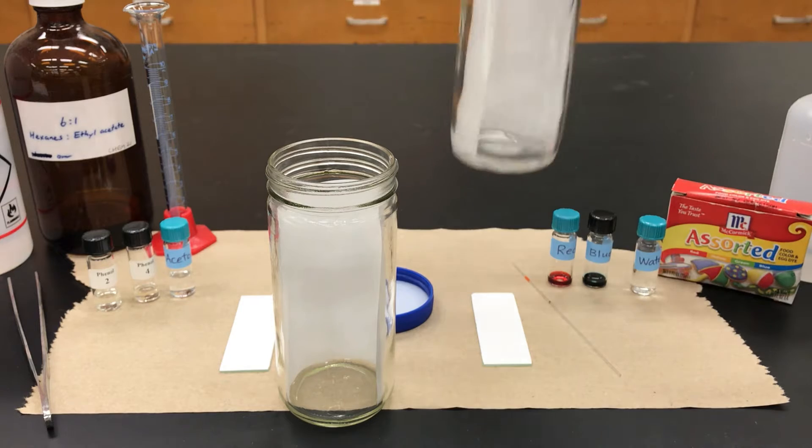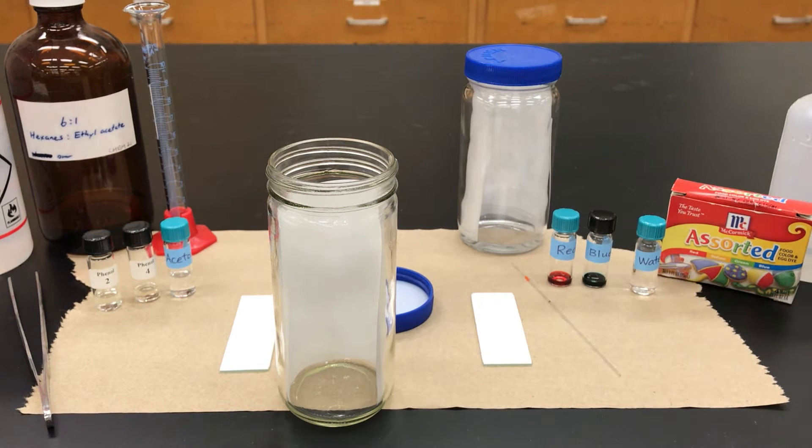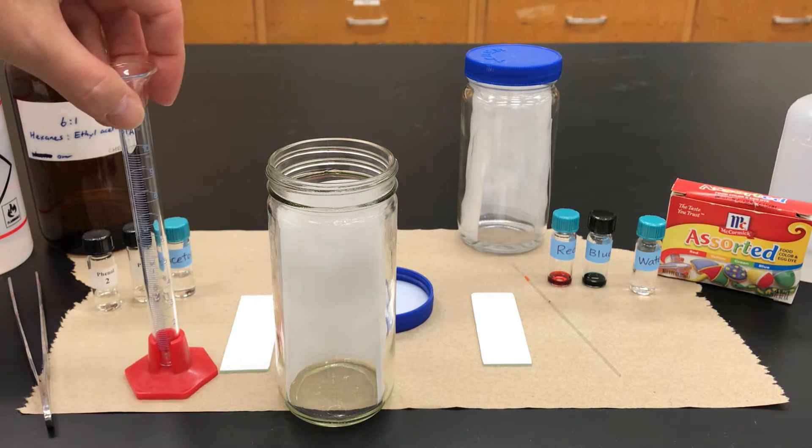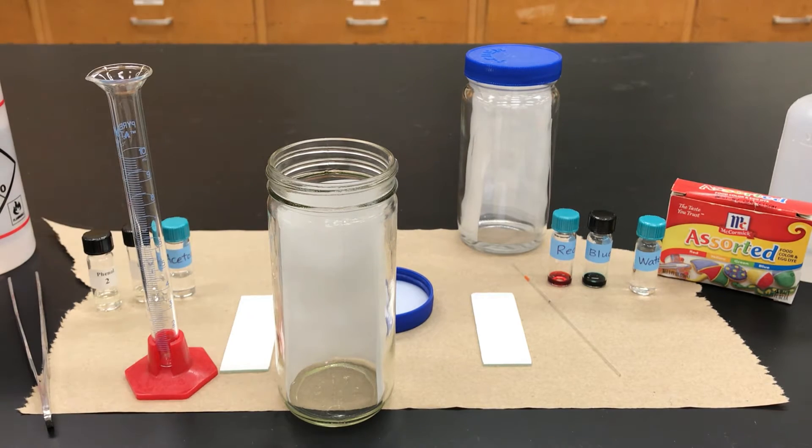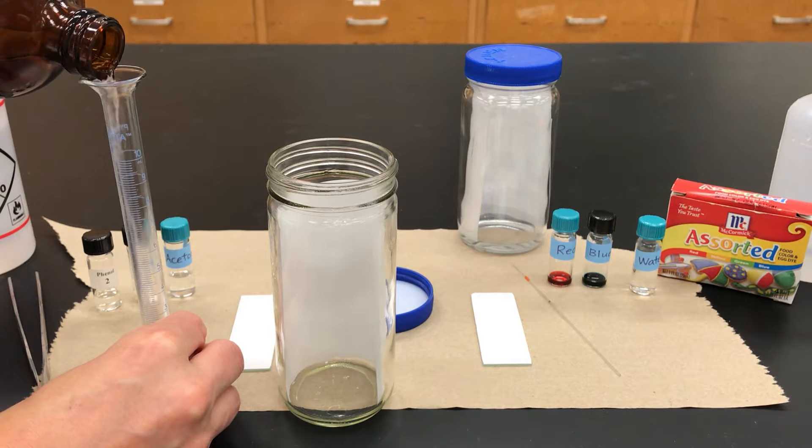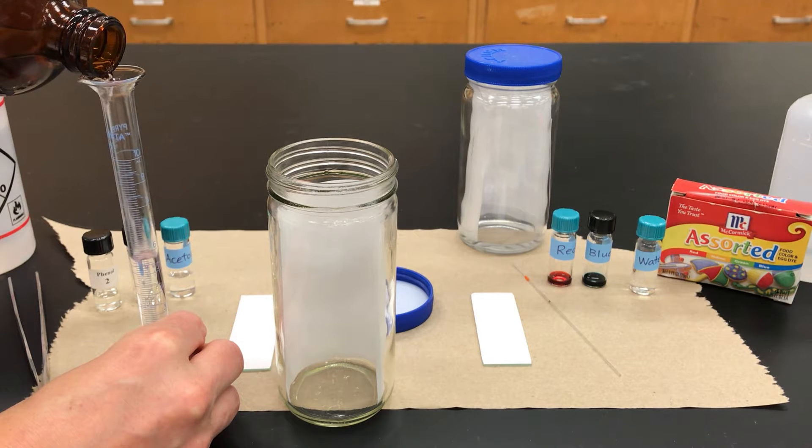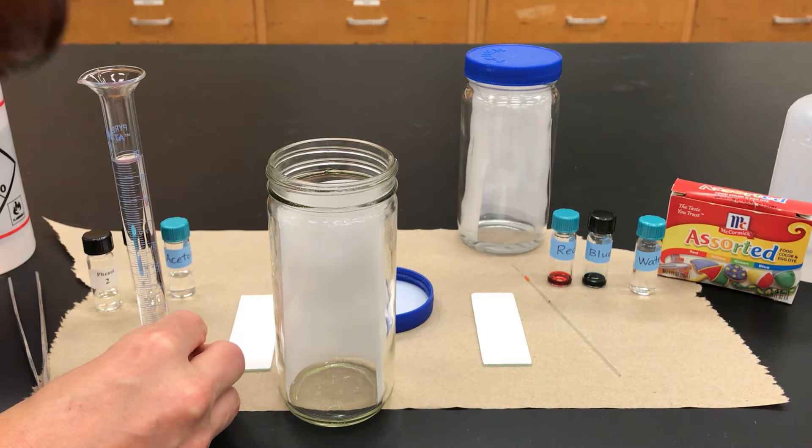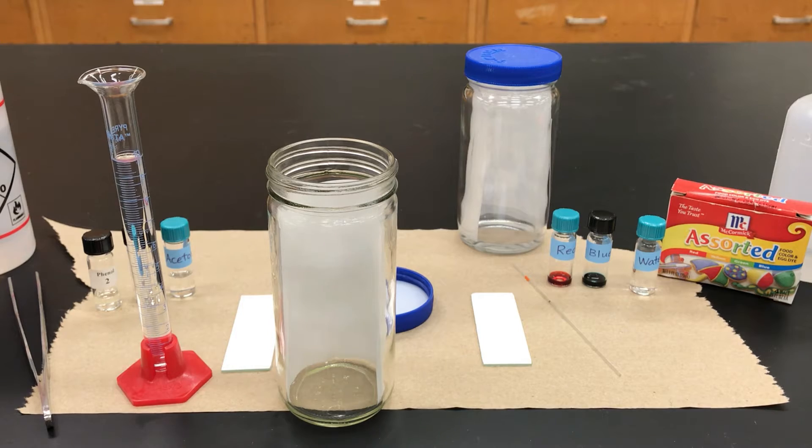The point of the filter paper is that as you run the TLC, liquid is going to crawl up this plate, and if you don't have the chamber saturated with vapors, it might just evaporate and dry up as it goes along. So by having that filter paper wet, it really promotes a saturated environment and lets the TLC run better.